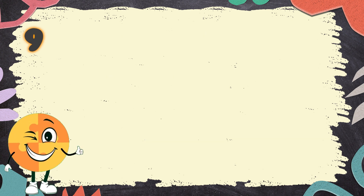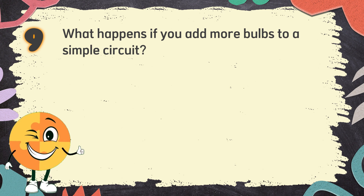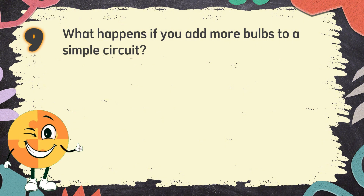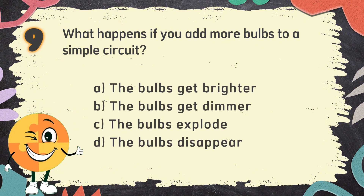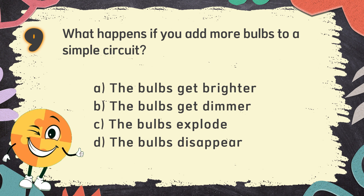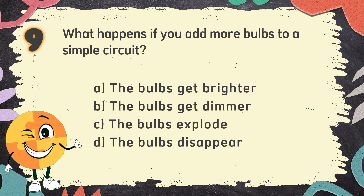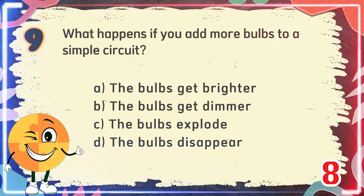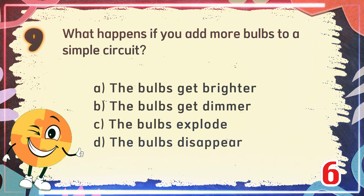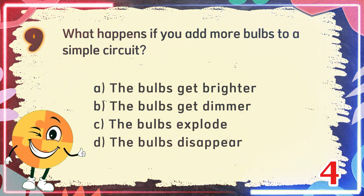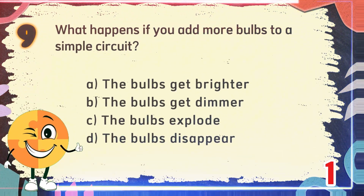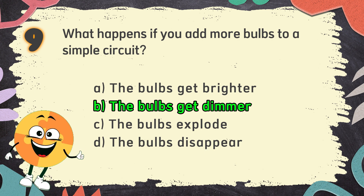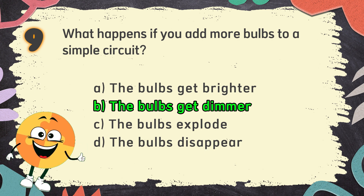Number 9. What happens if you add more bulbs to a simple circuit? The choices are: A. The bulbs get brighter, B. The bulbs get dimmer, C. The bulbs explode, D. The bulbs disappear. The correct answer is B. The bulbs get dimmer.